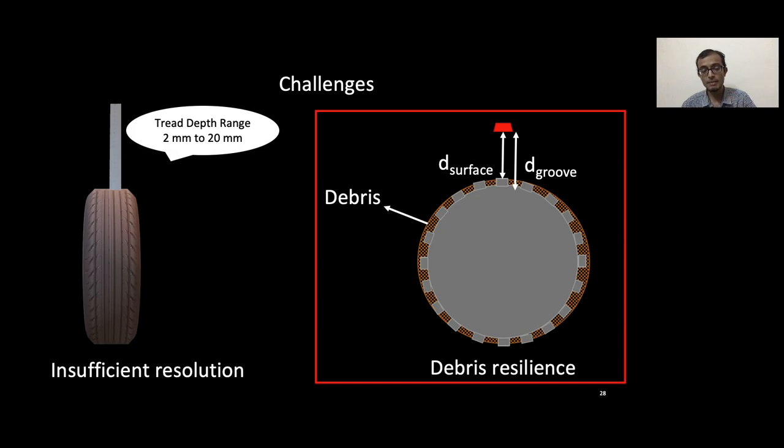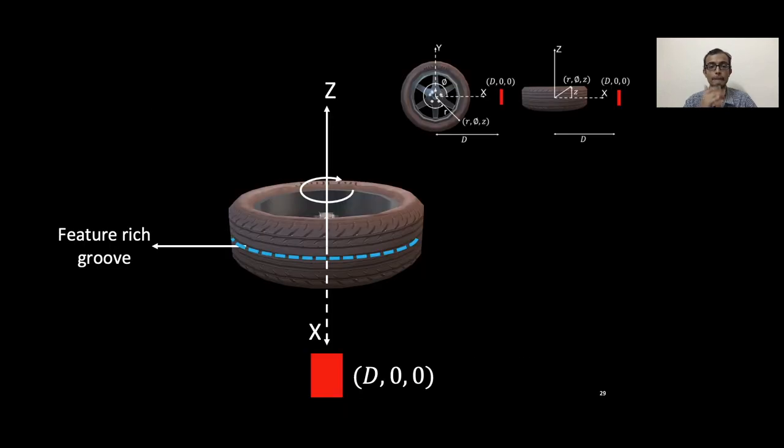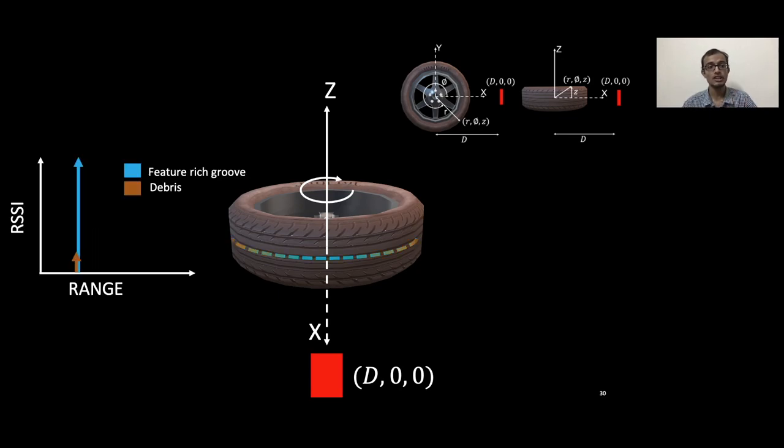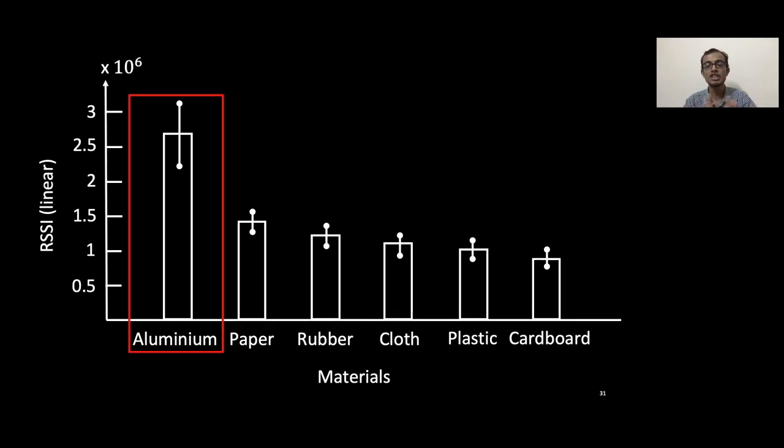Moreover, in the impact of debris, the groove's reflection will be dominated by the debris's reflection. So what we propose is to make the groove feature-rich. One way to make it feature-rich is to boost its received signal strength over and above the debris. One way to do that is by ensuring that the artificially laid out patterns or the structure in the groove are made out of a certain material.